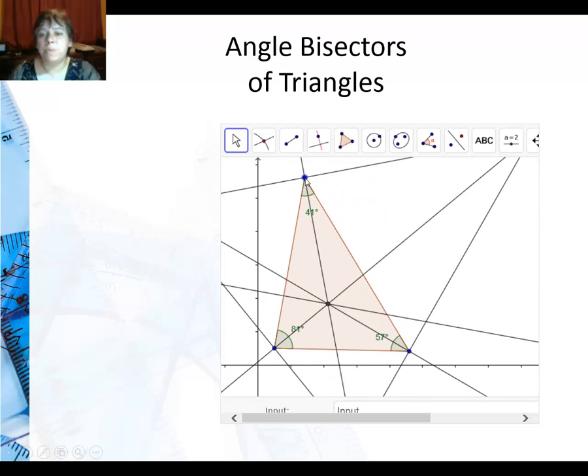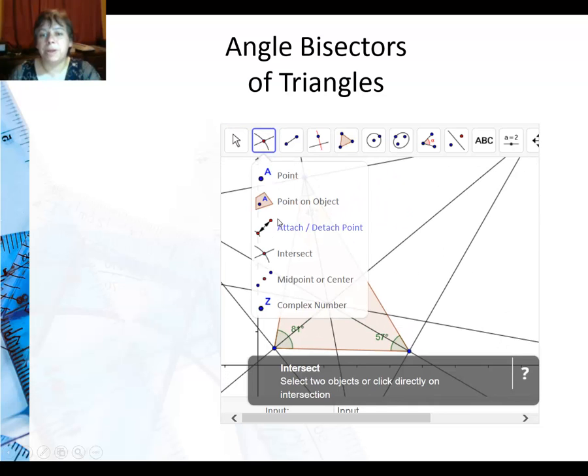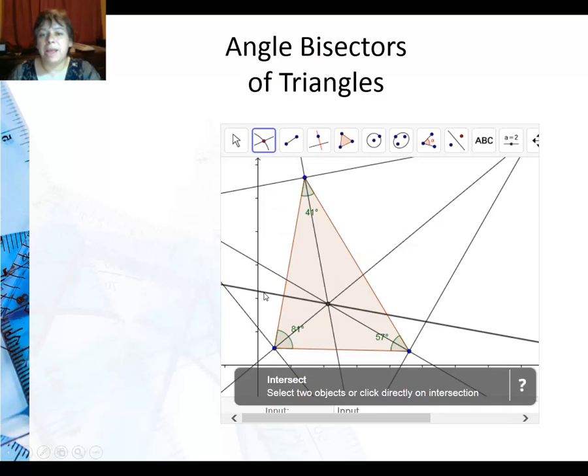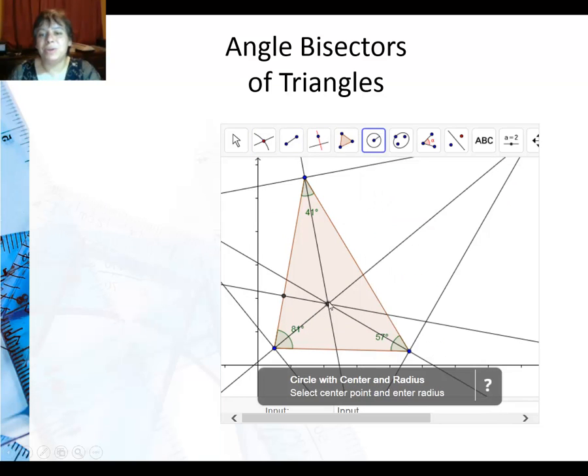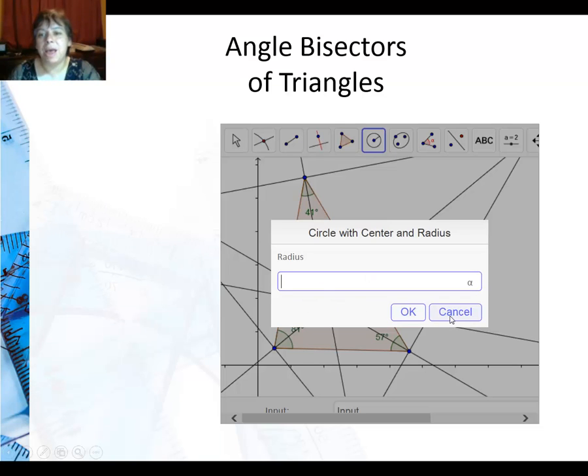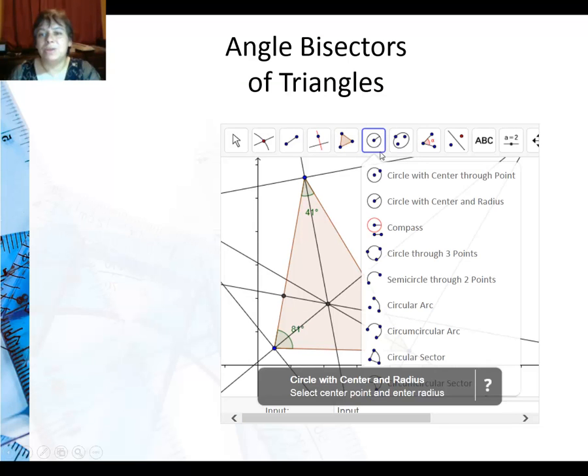So if I do my perpendicular bisector, there's my perpendicular, and I intersect it with the side, it does make a circle. So this is not something you're really... hold on.